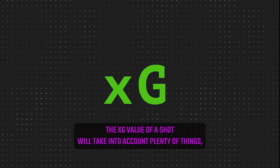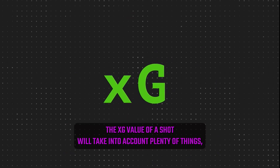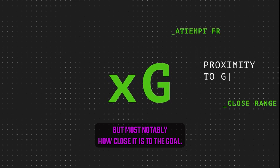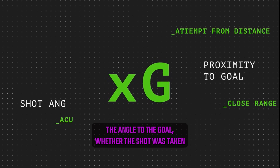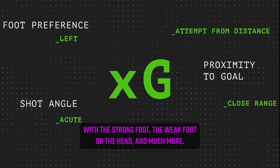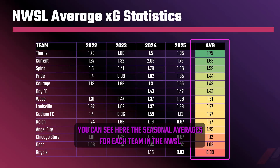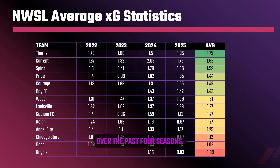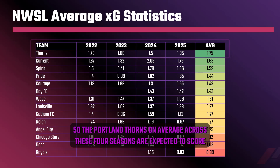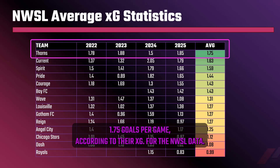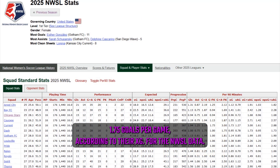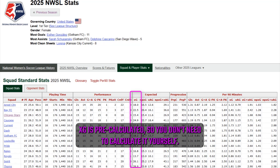The XG value of a shot takes into account plenty of things, but most notably: how close it is to the goal, the angle to the goal, whether the shot was taken with the strong foot, the weak foot, or the head, and much more. You can see here the seasonal averages for each team in the NWSL over the past four seasons. For example, the Portland Thorns, on average across these four seasons, are expected to score 1.75 goals per game according to their XG. For the NWSL data, XG is pre-calculated, so you don't need to calculate it yourself.